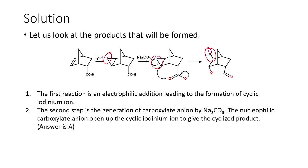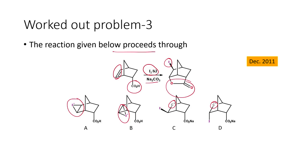The attack happens from the bottom — that is the only possibility. Intermediate B cannot be correct because the iodine in B is pointing downwards, and when the iodonium ion and carboxylate anion are on the same side (cis orientation), attack cannot take place. In intermediate A, the iodonium ion points upward and the carboxylate anion points downward — anti-addition or trans addition. The carboxylate anion attacks from the bottom and the ring opens to the top, placing iodine at the top in the final product. Therefore A is the correct intermediate.